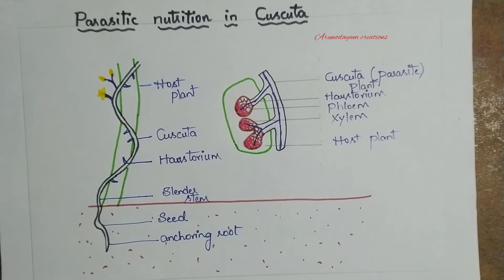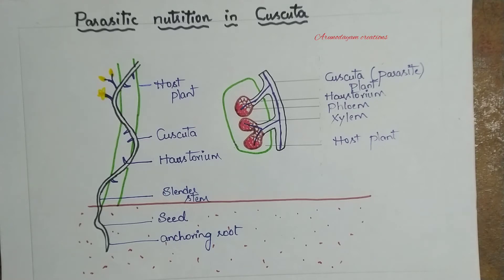The purpose of a leaf is to trap solar energy, as it contains photosynthetic pigments. But since Cuscuta has no photosynthetic pigments, leaves are not required. Instead of leaves, they have scale-like structures, and Cuscuta is twining in nature.